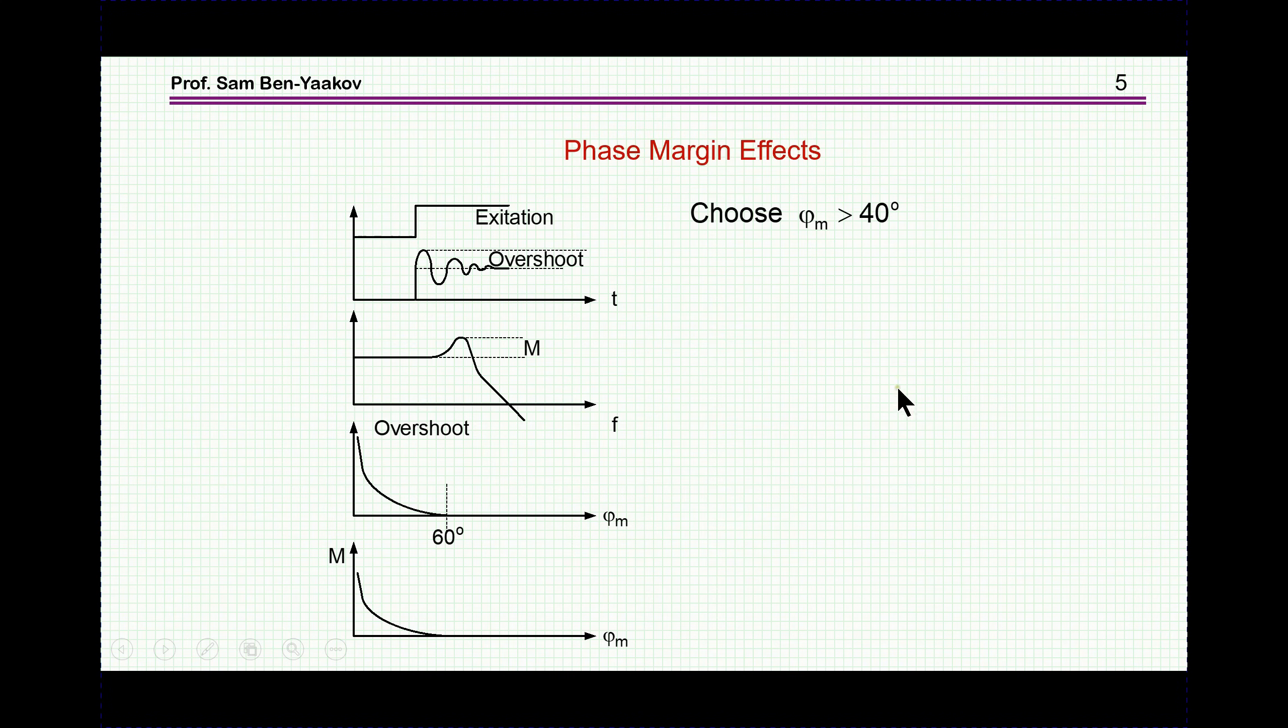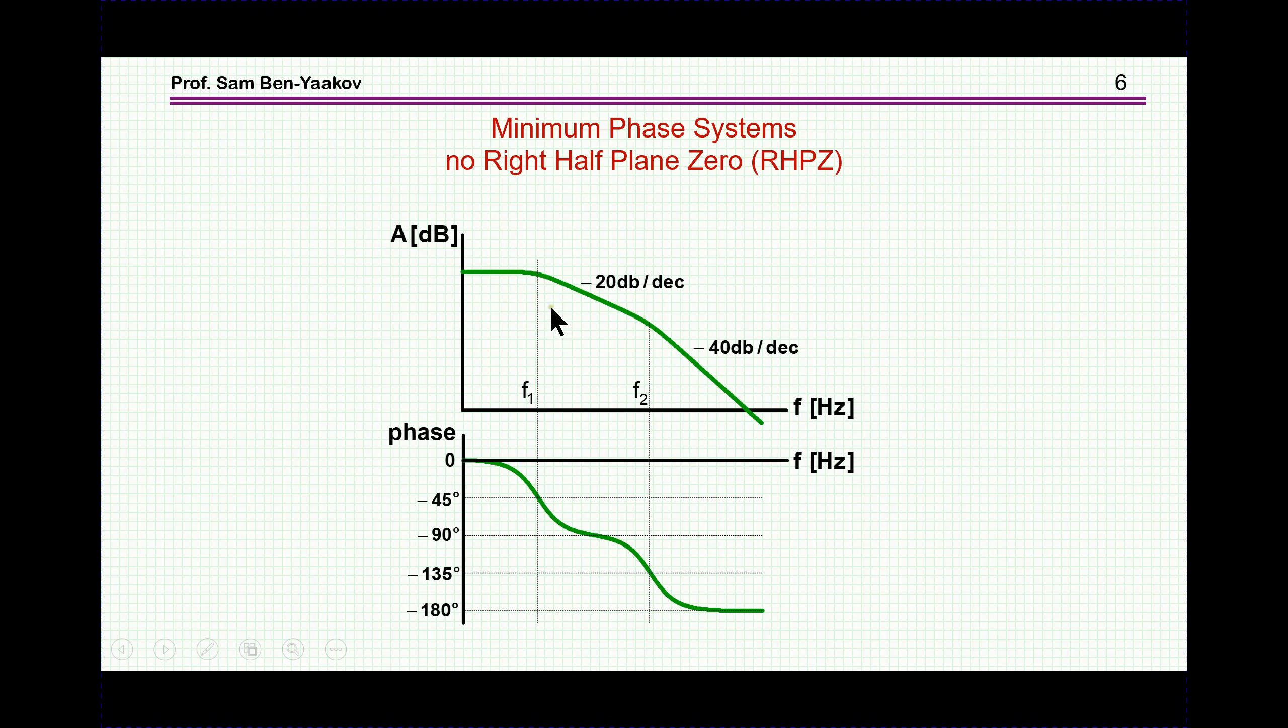Now, we want the phase margin to be fairly large or larger than, say, 40, because if this is the excitation, if the phase margin is small, we're going to have overshoot. And the transfer function in closed loop is going to have this peak, this overshoot here, or this peak here. And these two are a function of the phase margin. The smaller the phase margin, the larger is the overshoot, and the larger is this peak here.